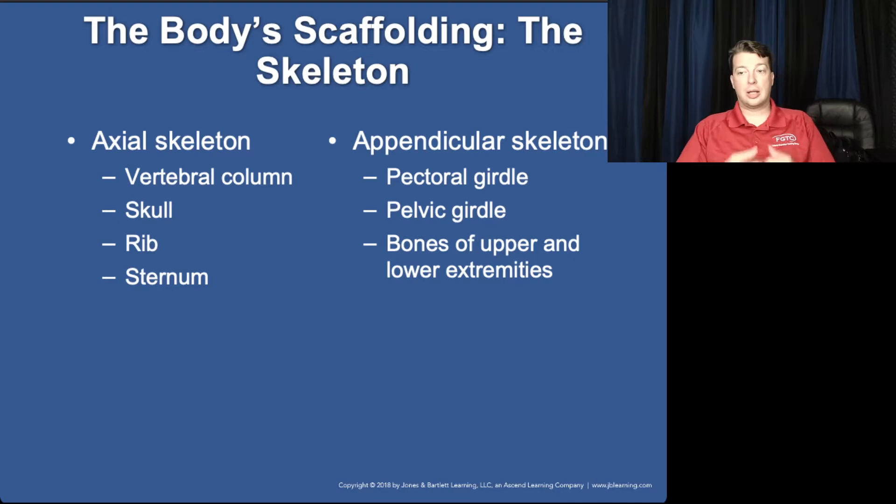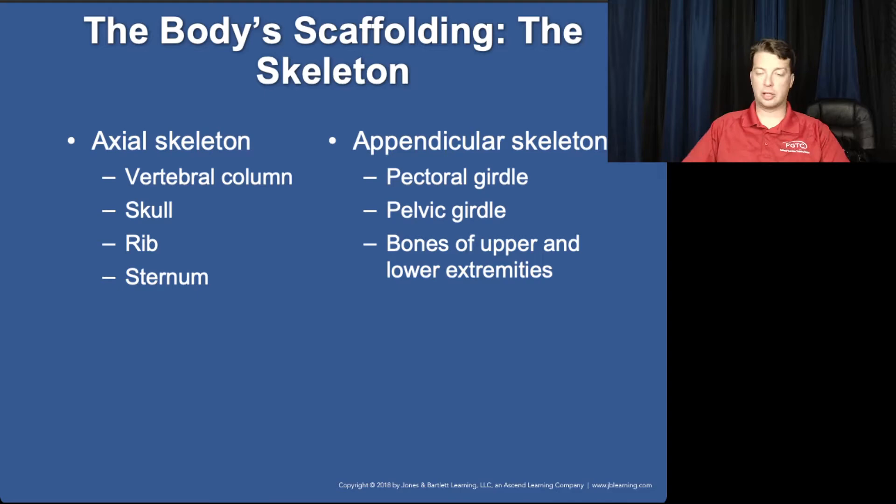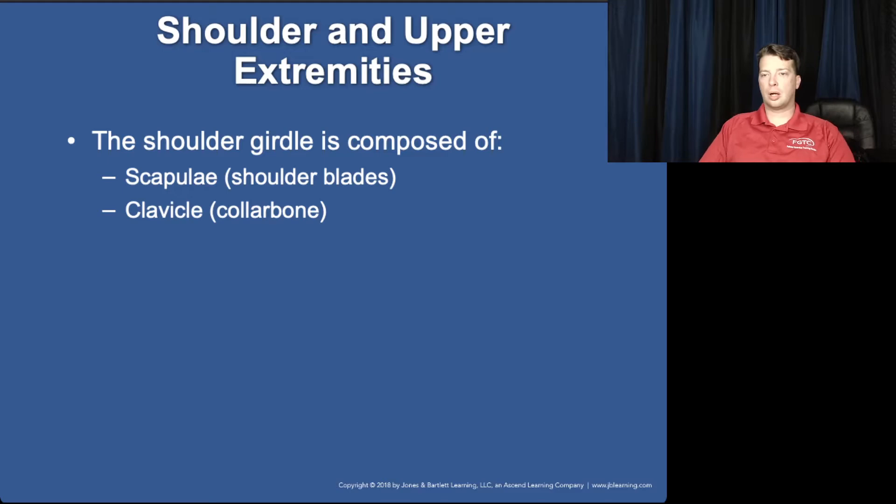So pelvic girdle, your pectoral girdle — these are your clavicle, your scapula, and all that — and then your upper and lower extremity bones: humerus, femurs, radial ulna, tibia, fibula.